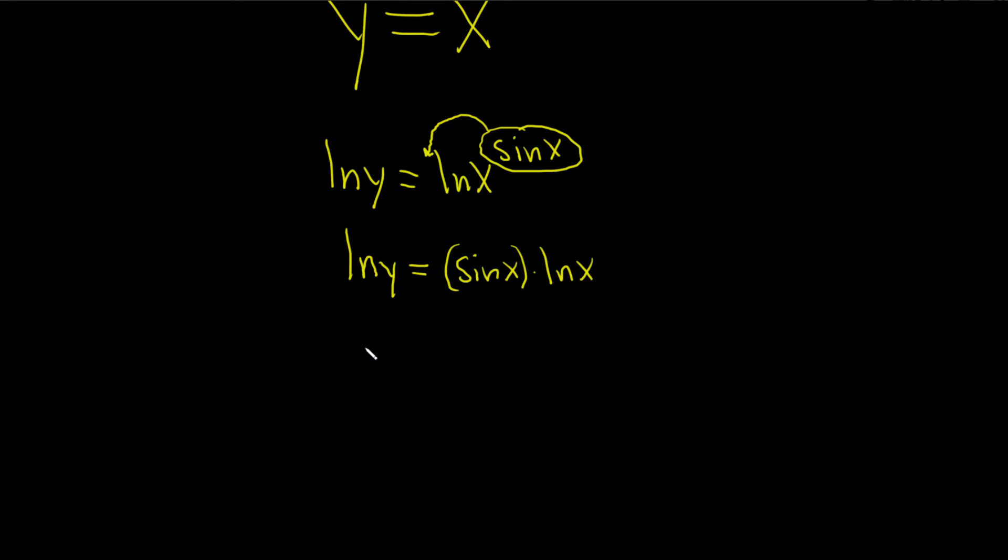In particular, it's the one we have here. So its derivative is just 1 over y times the derivative of y with respect to x, so just dy dx. We don't know what it is, we're trying to find it, so we just call it by its notation, dy dx.